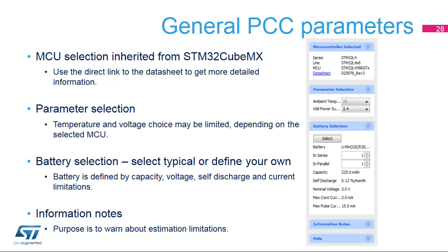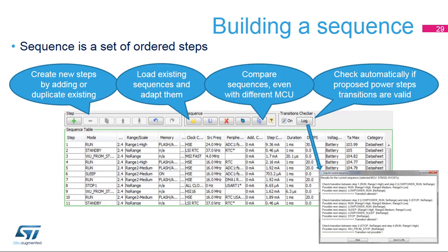Information and help sections include useful notes for the user. The sequence table defines a series of steps with different durations and configurations, and its length is virtually unlimited. Sequences can be loaded, modified, and reused. Individual steps can be duplicated and repositioned within the sequence. If enabled, all state transitions are checked against basic validity rules to prevent illegal jumps in frequency or power ranges.